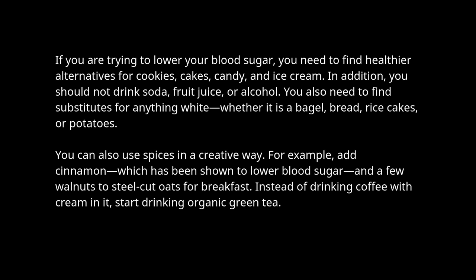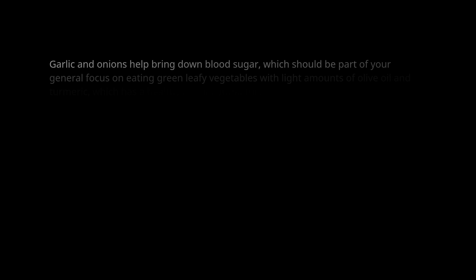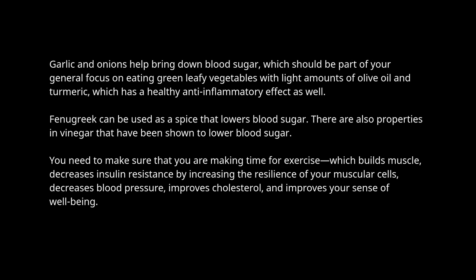You can also use spices in a creative way. For example, add cinnamon — which has been shown to lower blood sugar — and a few walnuts to steel cut oats for breakfast. Instead of drinking coffee with cream, start drinking organic green tea. Garlic and onions help bring down blood sugar, and should be part of your general focus on eating green leafy vegetables with light amounts of olive oil and turmeric, which has a healthy anti-inflammatory effect. Fenugreek can be used as a spice that lowers blood sugar, and vinegar has also been shown to have properties that lower blood sugar.